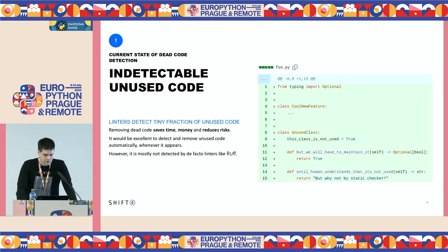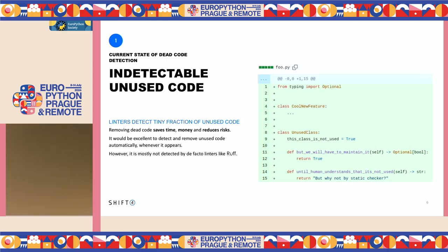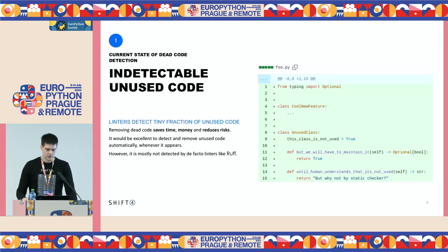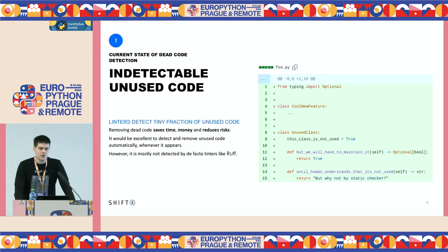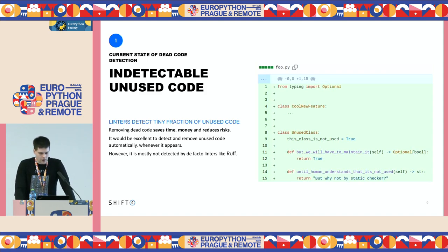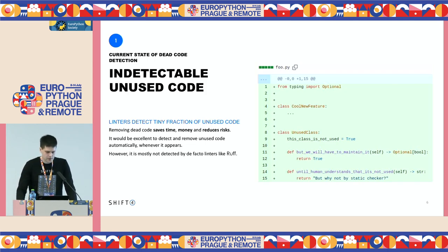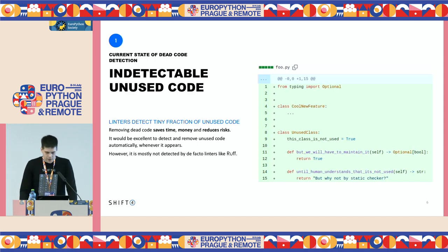I want to share a short story of mine. Once I bumped into a pull request which contained a new feature, but it also contained an unused class. Probably the author wanted to use this class at first but decided not to and forgot to remove it. I was surprised that this type of unused class had slipped into a pull request undetected, because we were using bleeding-edge linters like Ruff with all the rules enabled. This made me curious and led to an investigation.